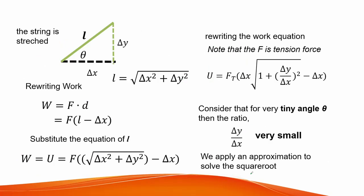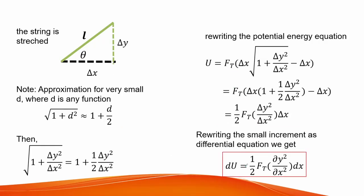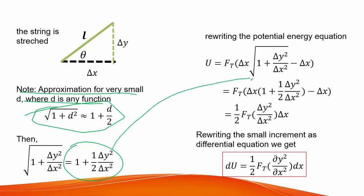If we examine L, it equals the square root of the sum of the run and rise squared. Substituting back into the work expression and noting that the force is the tension of the string, and considering that the angle is very small — meaning the ratio of rise over run is very small — we apply the approximation that the square root of (1 plus d squared) is approximately 1 plus d over 2. Applying this, the potential energy for a small increment equals one-half times tension force times the square of the first partial derivative times dx.